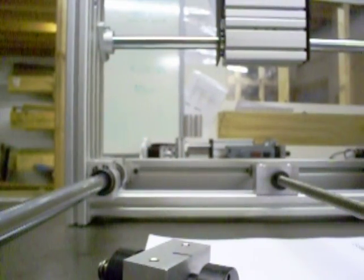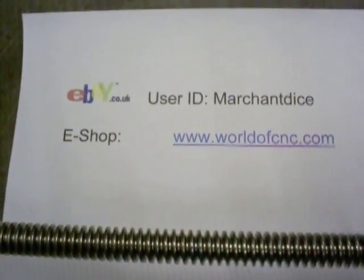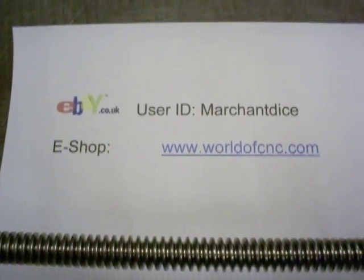These items are available on our eBay shop or via our other eShop. Our eBay user ID is merchandise and the eShop is welderCNC.com.